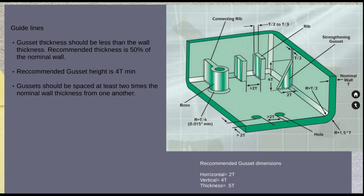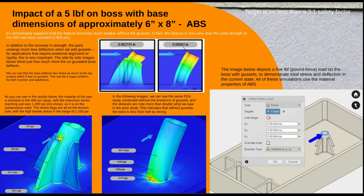The gusset thickness should be less than the wall thickness — the recommended thickness of the gusset is 50 percent of the nominal wall thickness. The recommended height of the gusset is 4T, where T is the overall thickness of the component. The recommended width of the gusset is 2T, and the recommended spacing between two gussets is at least two times the thickness of the component.